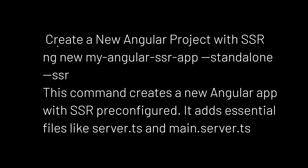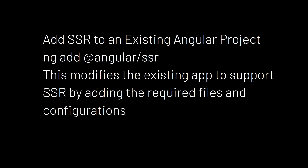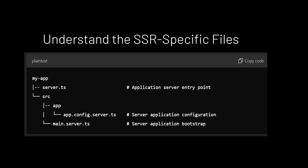To create a new Angular project with SSR, use the command: `ng new my-angular-ssr-app --standalone --ssr`. This command automatically creates a new Angular app with SSR pre-configured, adding essential files like server.ts and main.server.ts. If you want to add SSR to an existing Angular project, use `ng add @angular/ssr`, which modifies the existing app to support SSR by adding the required files and configuration.